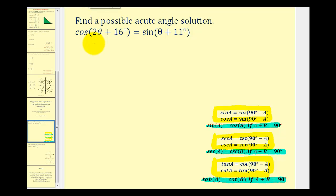So we want to solve the equation two theta plus 16 degrees plus theta plus 11 degrees must equal 90 degrees.